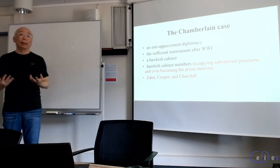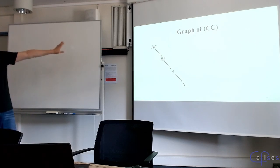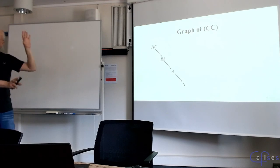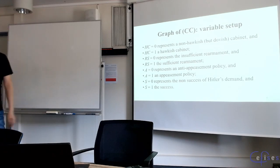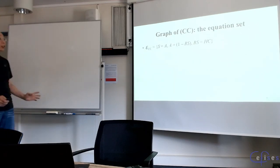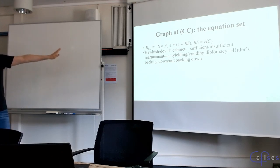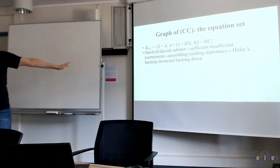But why and how? The graph so far contains: hawkish cabinet (HC), sufficient rearmament (RS), appeasement or anti-appeasement policy, and the success or non-success of Hitler backing down. That's the graph. The equation set says: hawkish or dovish cabinet causally connected to sufficient or insufficient rearmament, causally connected to unyielding or yielding diplomacy, causally connected to Hitler's backing down or not. The causal profile of the variable FC is not fully explored yet, because FCM — hawkish cabinet members — hasn't been shown to play any role yet.